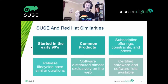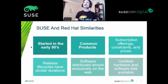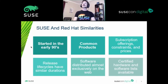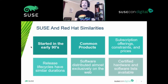SUSE and Red Hat similarities — there are quite a few. Both had their start way back in the mid-90s. SUSE had their first release in 1994 and Red Hat came about the same time, in the middle of the next year. Both have similar infrastructure for support, distribution, and training. Looking at the product offerings, there are similar categories: core OS, cloud storage, and even a system management tool.